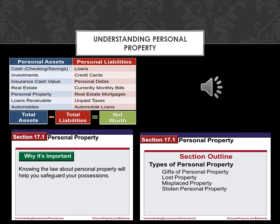In the event that their personal property is destroyed, policyholders must file a claim with their insurance company describing what they lost. For that reason, homeowners are well advised to make an inventory of their personal property, ideally with photos and receipts, and store it safely off-premise in case it's ever needed. Homeowner's policies also limit coverage for certain types of personal property, such as jewelry and computers.